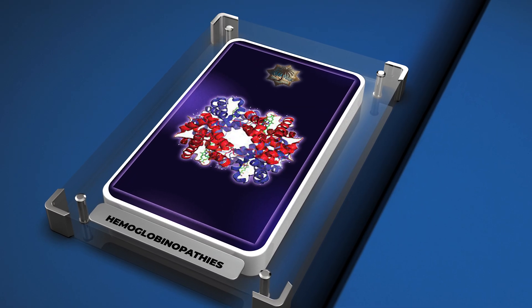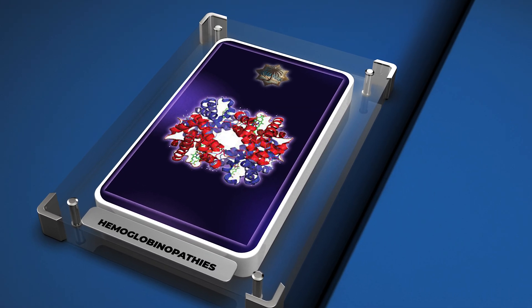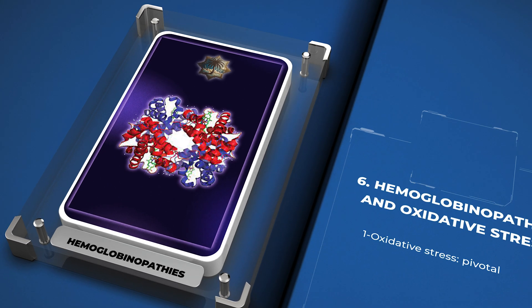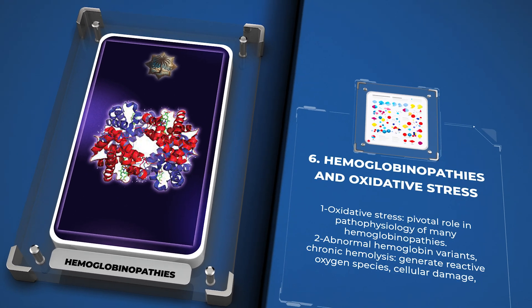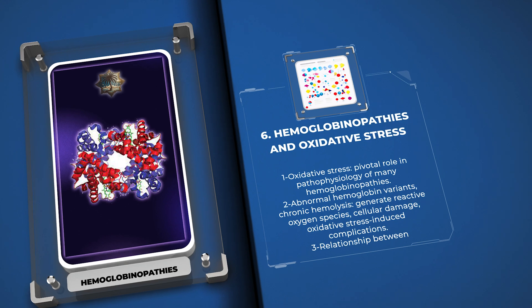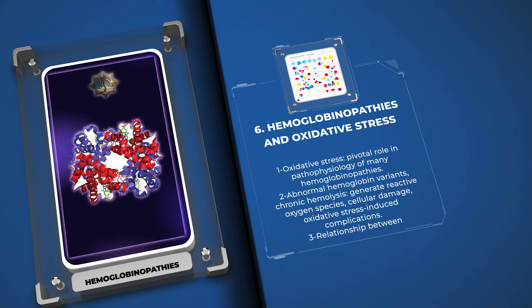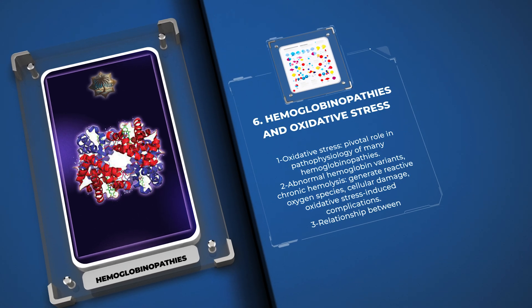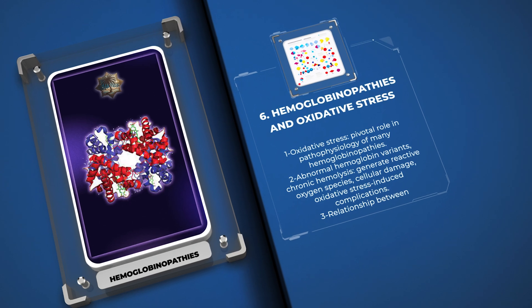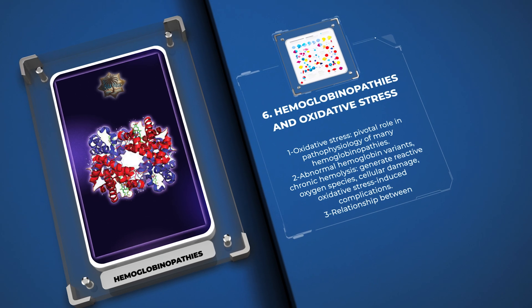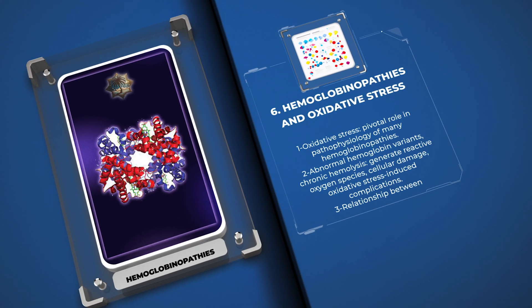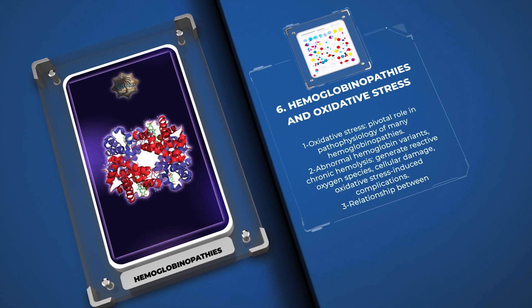Oxidative stress plays a pivotal role in the pathophysiology of many hemoglobinopathies. Abnormal hemoglobin variants, coupled with chronic hemolysis, generate reactive oxygen species, leading to cellular damage and oxidative stress-induced complications. We will examine the intricate relationship between hemoglobinopathies and oxidative stress, emphasizing potential therapeutic targets for alleviating oxidative damage.